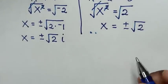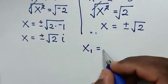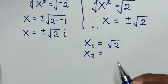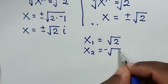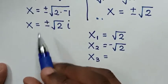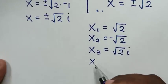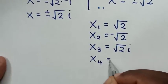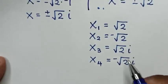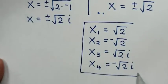Therefore, from this problem, the four values of x are: the first value is positive square root of 2, the second value is negative square root of 2, the third value is positive square root of 2 times i, and the fourth value is negative square root of 2 times i. So these are all 4 values of x in this problem.